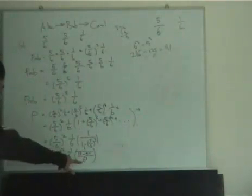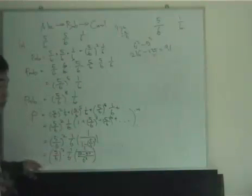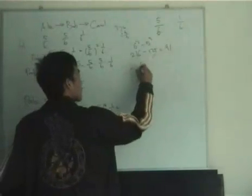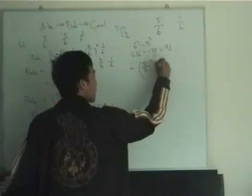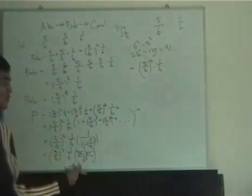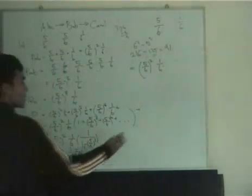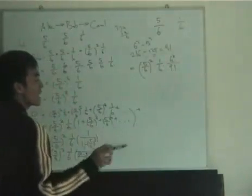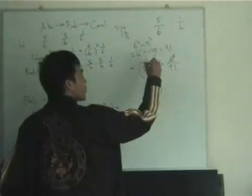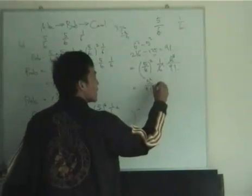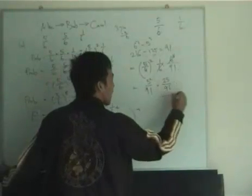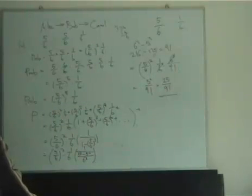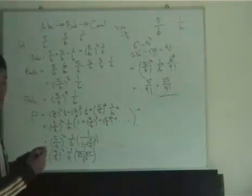Keeping things as indices allows us to cancel: we have 6² × 6 = 6³ = 216 on top cancelling with 216 in the numerator, leaving 5²/91. So P = 25/91. That is the final answer.